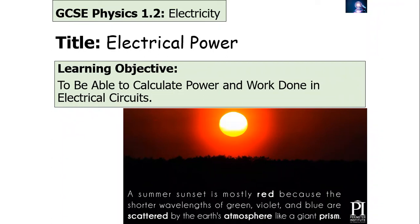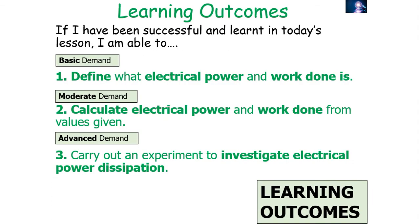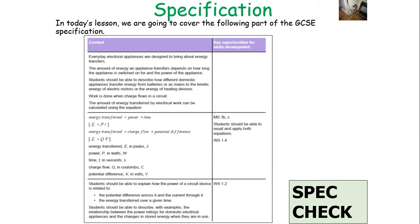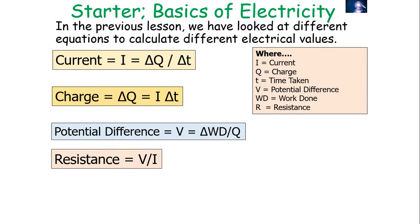Hello and welcome to today's lesson looking at electrical power. Today's lesson is suitable for both AQA GCSE separate science and AQA GCSE combined science for the physics module electricity. In today's lesson we're going to calculate power and work done in electrical circuits, define what electrical power and electrical work done are, look at how we can calculate those values, and then investigate electrical power dissipation. This part of the course covers the power section of the specification, linking equations, definitions of power, and energy transfer.